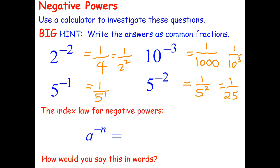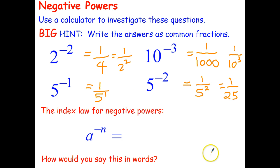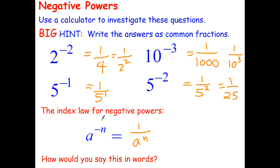Let's go and check if that actually does work. 5 raised to the negative 2 power — as a fraction — and it does check: 1 over 25. So the index law for negative powers, written algebraically, is: any number to the negative power — like 10 to the negative 3 — can be rewritten as 1 over the same base but to the positive power.